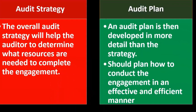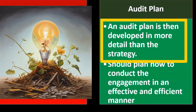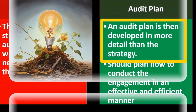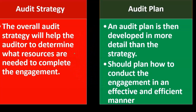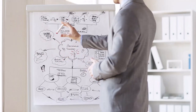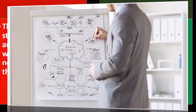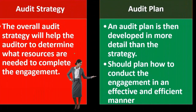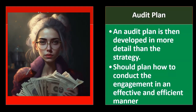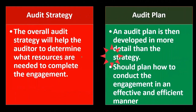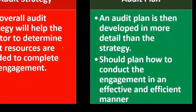An audit plan is then developed in more detail than the strategy. First we think about the overarching strategy — the framework. Then we start to frame it and put together the actual plan. The plan is more concrete, closer to a blueprint we can follow in a step-by-step mapped-out process, as opposed to the strategy, which is not quite at the blueprint level.